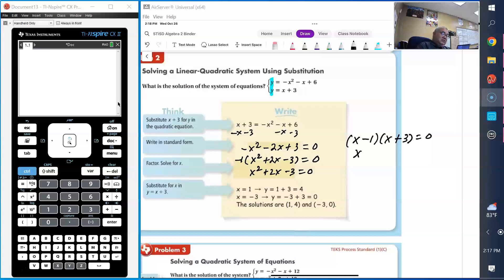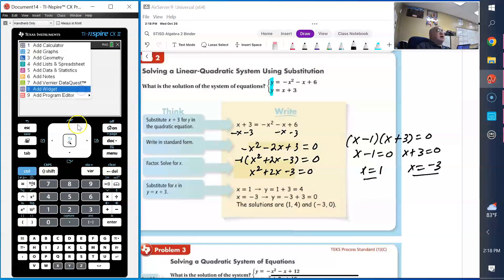So x equals 1 and x equals negative 3. To figure out the y value, substitute into the equation. I'm going to substitute into y equals x plus 3. So I have 1 plus 3, that's 4. The ordered pair is 1 comma 4. The other one is y equals negative 3 plus 3, which gives you 0. So it's negative 3 comma 0.